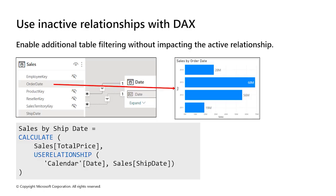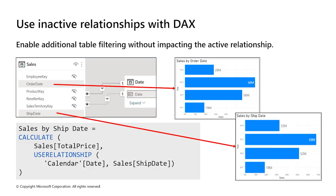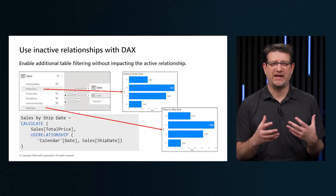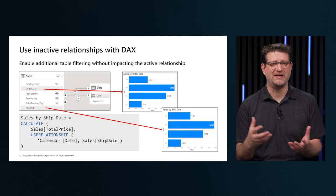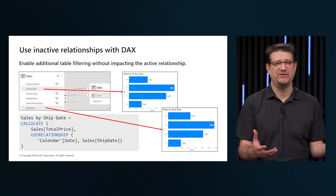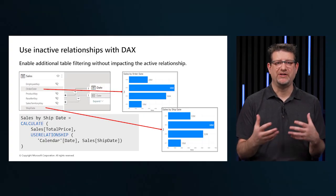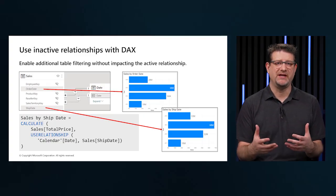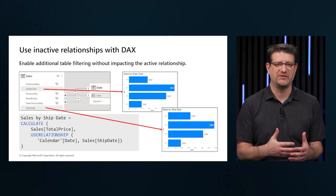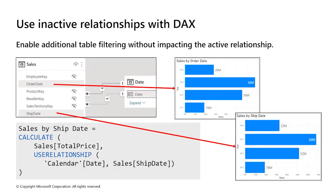To enable filtering on ship date, we use the DAX function USERELATIONSHIP. This function specifies a relationship to be used in a specific calculation without overriding any existing relationships. It allows developers to make additional calculations on inactive relationships by overriding the default active relationship between two tables in a DAX expression. As shown in the example 'sales by ship date,' we use CALCULATE to override the filters and implement USERELATIONSHIP to activate the relationship with ship date. With that measure created, we can build the corresponding visual.